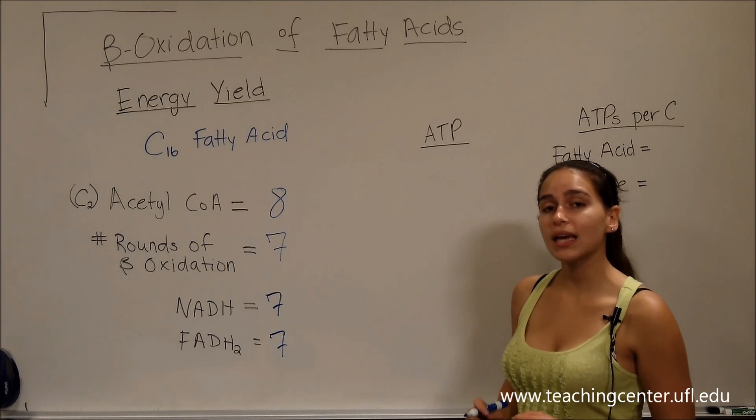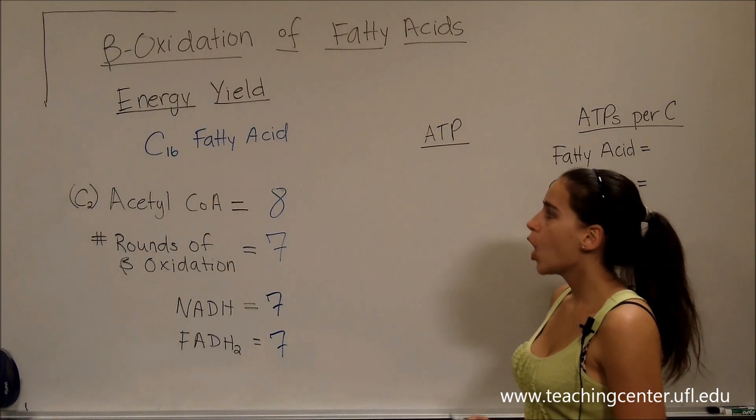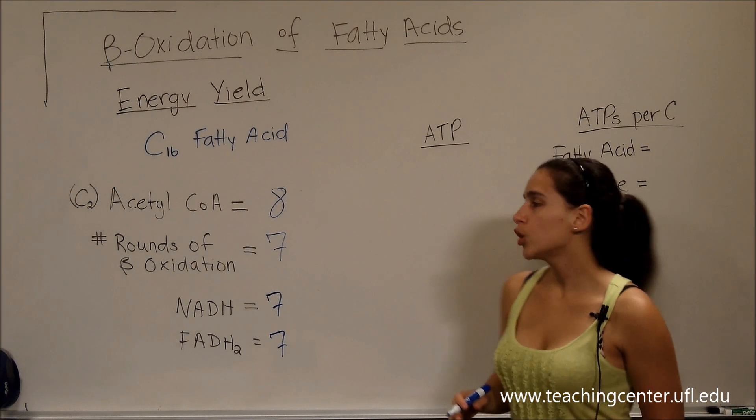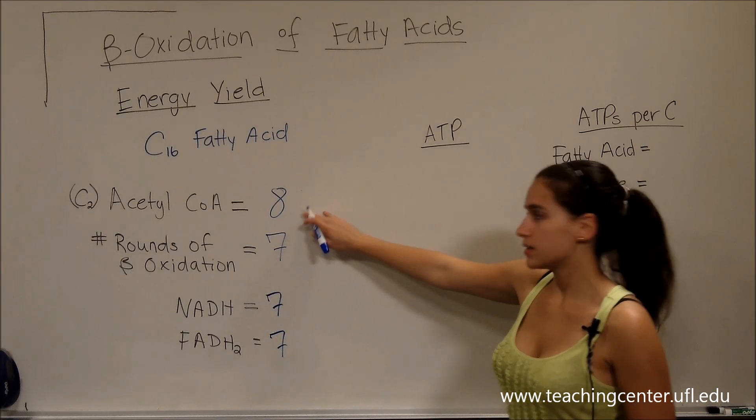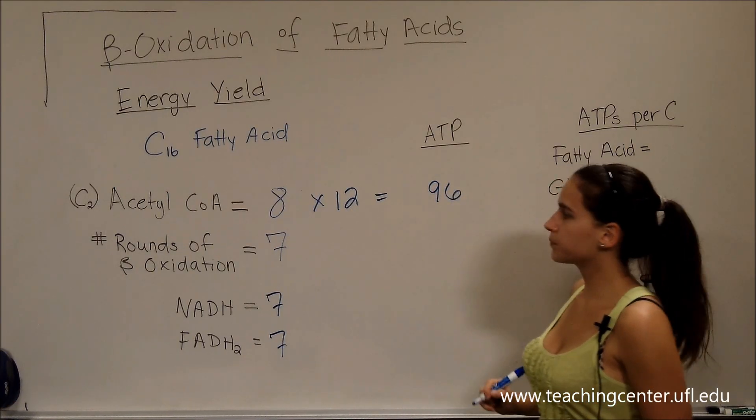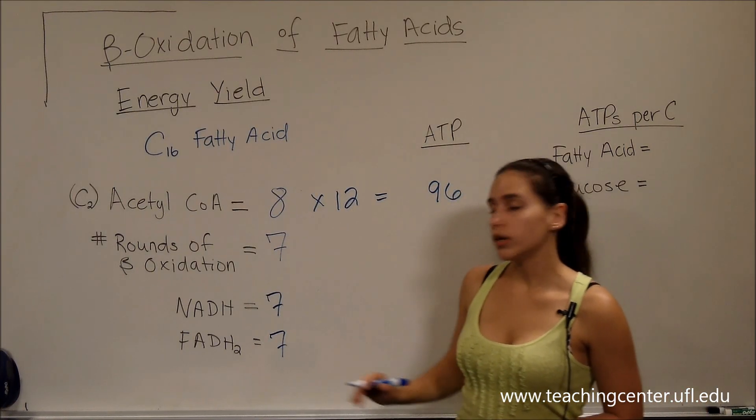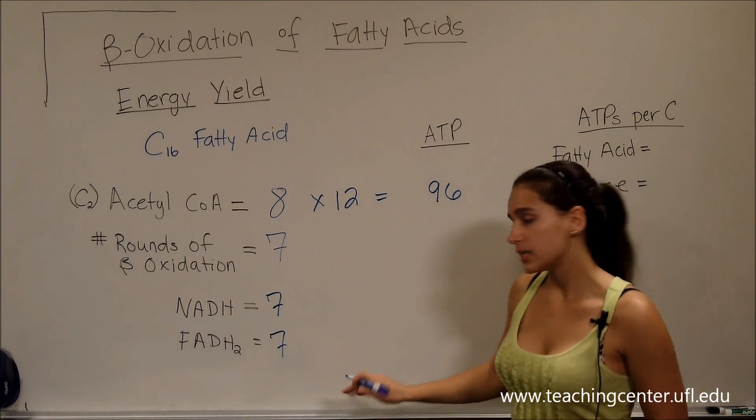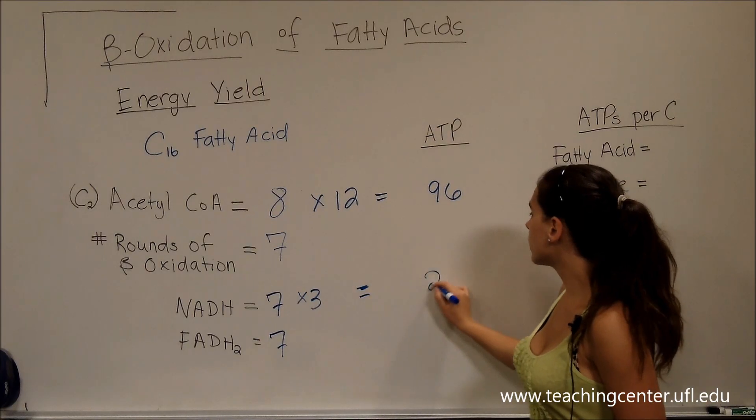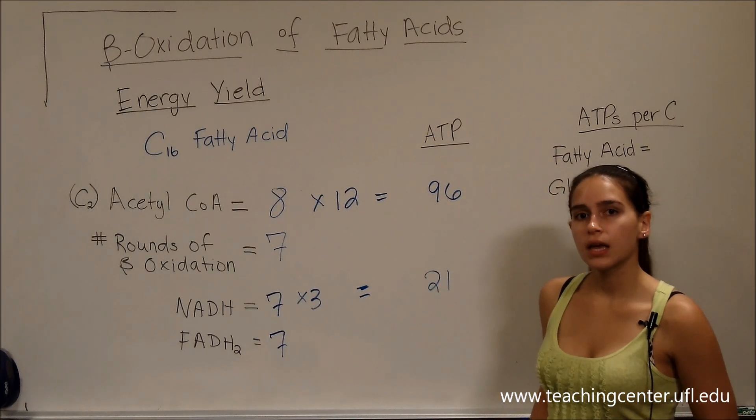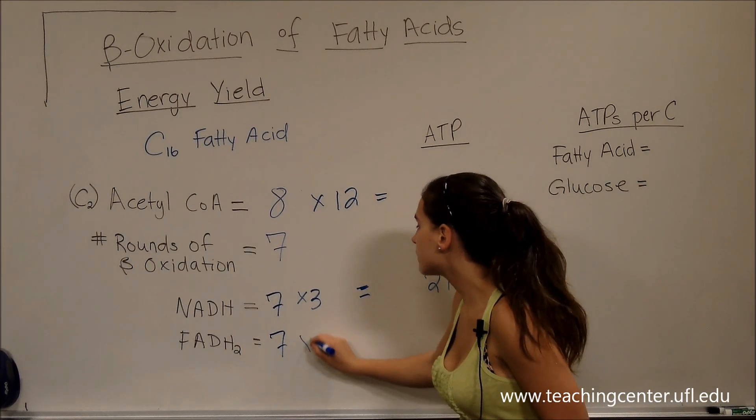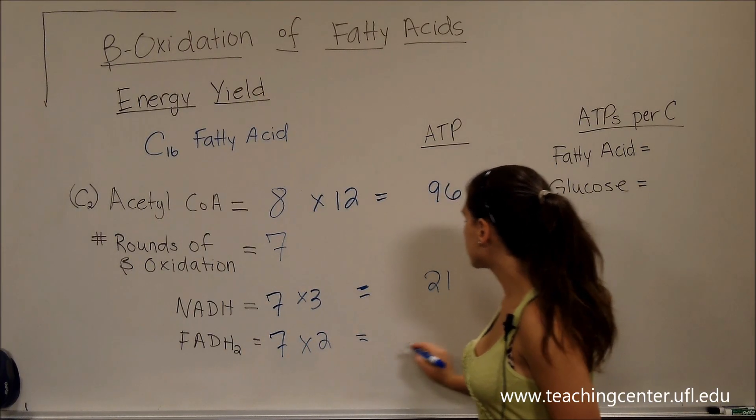So how many ATPs does that give us? We know from the TCA cycle that one acetyl-CoA is going to give us 12 ATPs. So eight acetyl-CoA's is going to give us 96 ATPs. We know that one NADH is going to give us three ATPs. So seven is going to give us 21 ATPs. And we know that if one FADH2 gives us two ATPs, then seven is going to give us 14 ATPs.